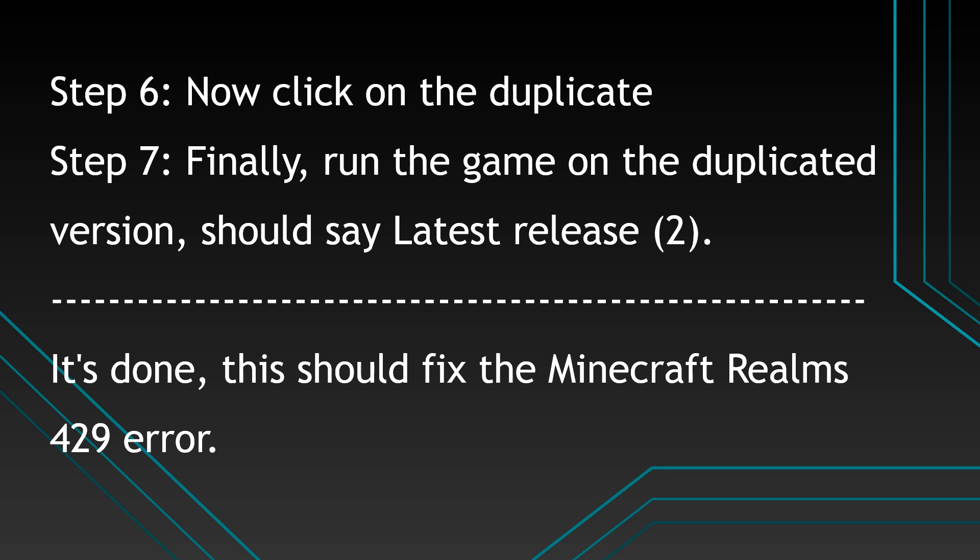Step 7: finally, run the game on the duplicated version — it should say 'Latest Release 2.' It's done, this should fix the Minecraft Realms 429 error.